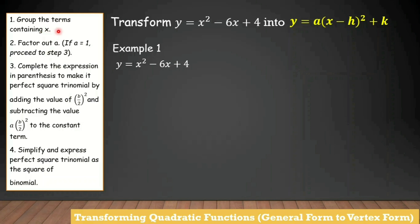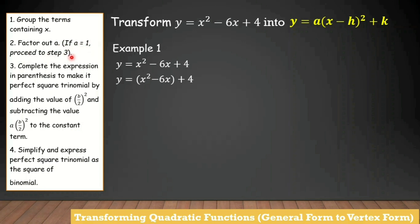First, group the terms containing x. Which terms here have x? We group them — so x squared and negative 6x are grouped together. Then number 2, factor out a. But if a equals 1, proceed to step 3. So since the value of a here is 1, we skip step 2 and proceed directly to step 3.